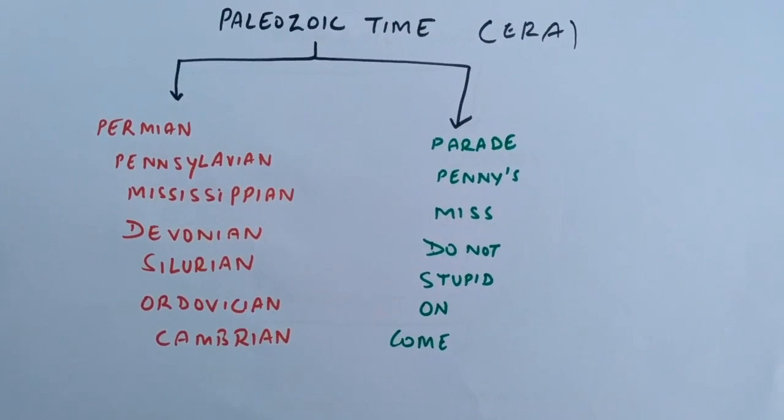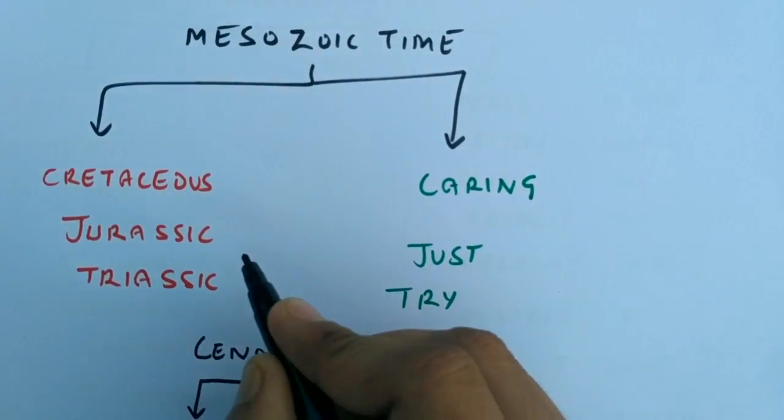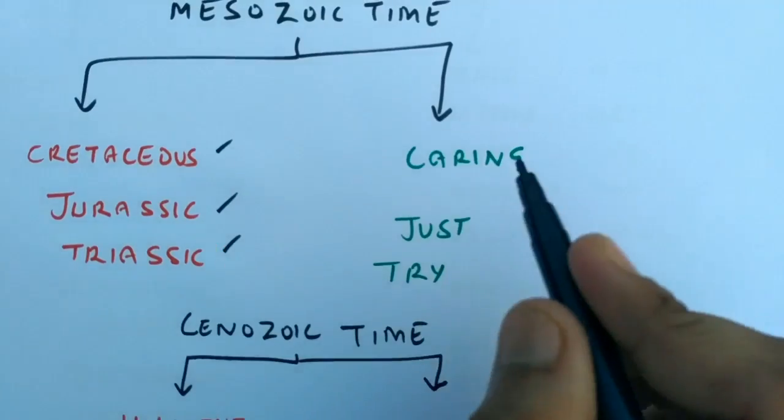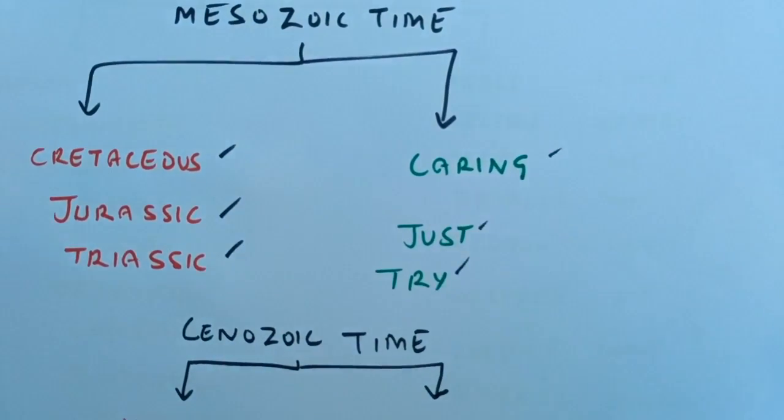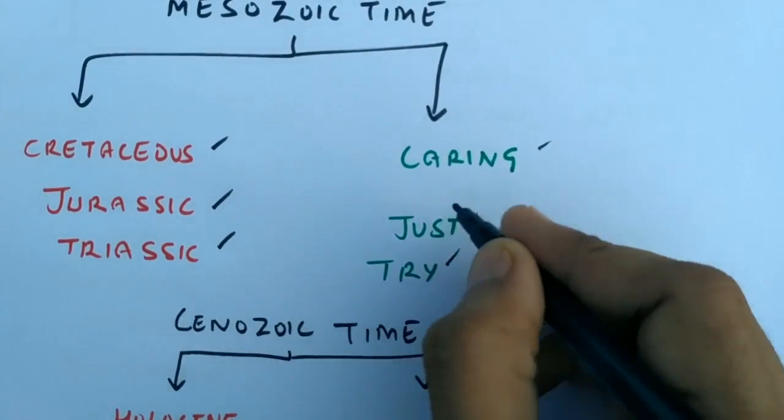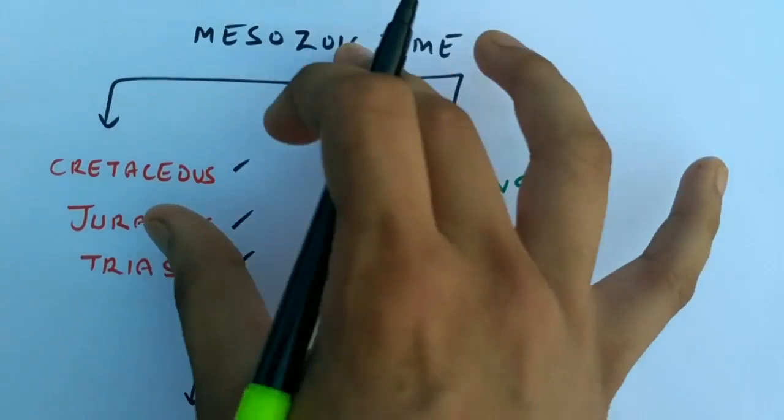Second is Mesozoic. There are three periods: Triassic, Jurassic, and Cretaceous. Try just crying, or caring. Try just caring. In three words you can remember the periods in the Mesozoic era.